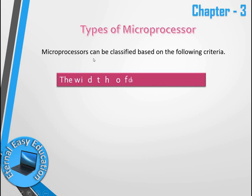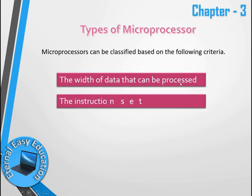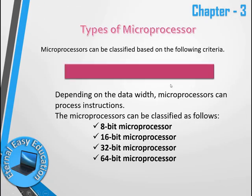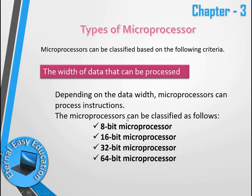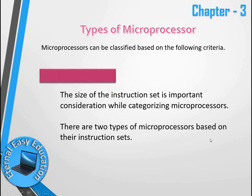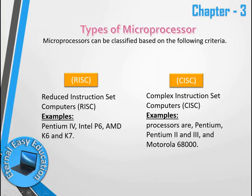Processor types: processors can be classified in two ways. The first is based on the width of the data that can be processed — 8-bit, 16-bit, 32-bit, and 64-bit. The current market is dominated by 64-bit processors. The word size determines how much data can be executed in a single instruction. This is the data-width based classification.